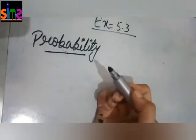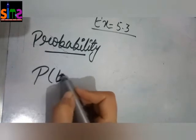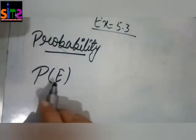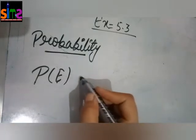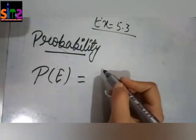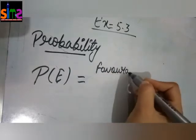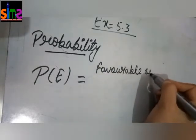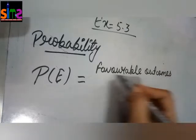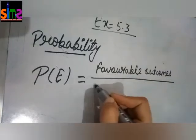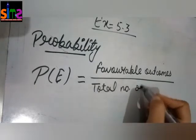What is the formula of probability? The formula of probability — probability of an event. E means event. The probability of an event is equals to favourable outcomes divided by total number of outcomes.